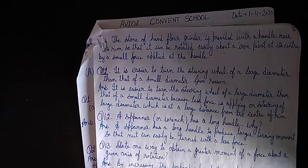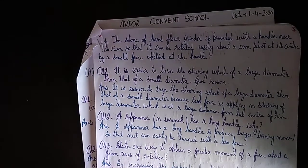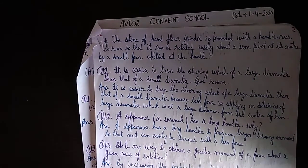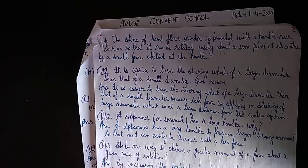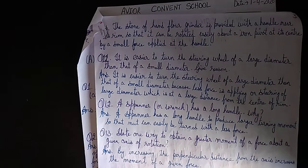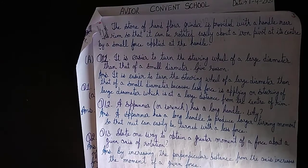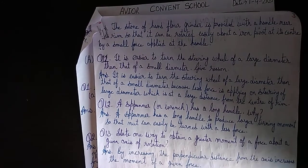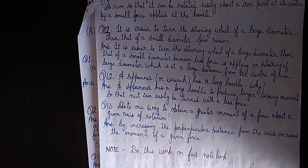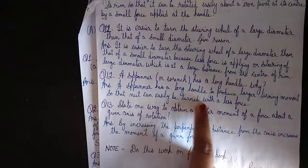Question number 11: it is easier to turn a steering wheel of a large diameter than that of a small diameter, because less force is applied on a steering wheel of large diameter which is at a large distance from the center of the frame. Similarly, a spanner has a long handle to produce a large turning effect so that the nut can easily be rotated with less force.